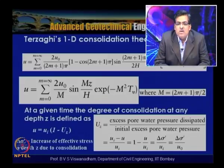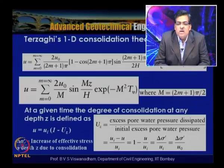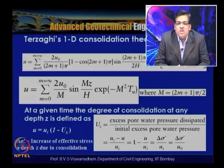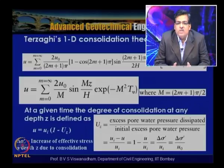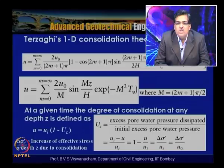From Uz = 1 − u/ui, we get u = ui(1 − Uz). For example, if Δσ = 100 kPa is applied with a constant variation, then ui = 100 kPa, and Uz is the degree of consolidation at a particular depth within the clay. If Δσ is the increase in effective stress at depth z due to consolidation, then ui equals that particular stress increment.